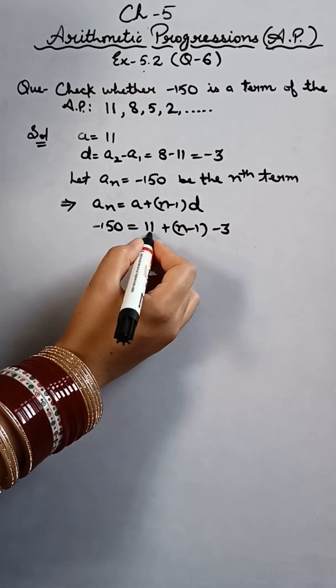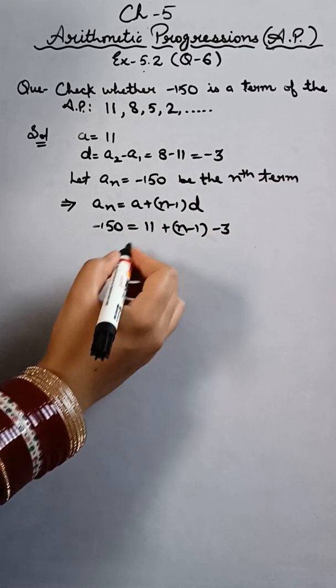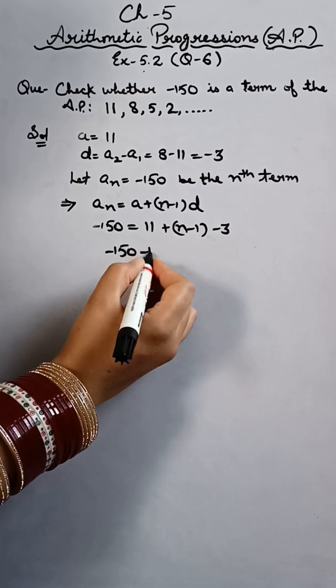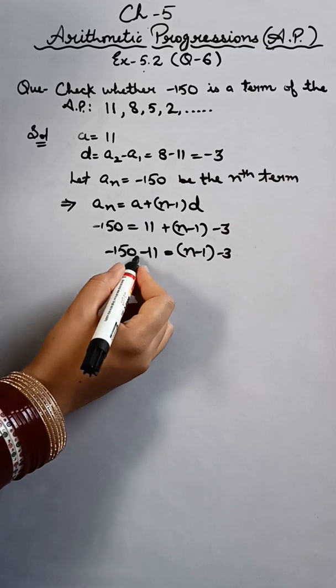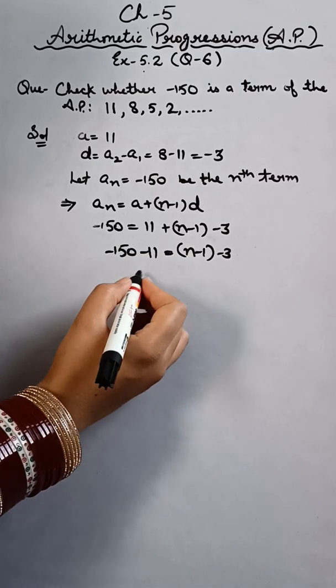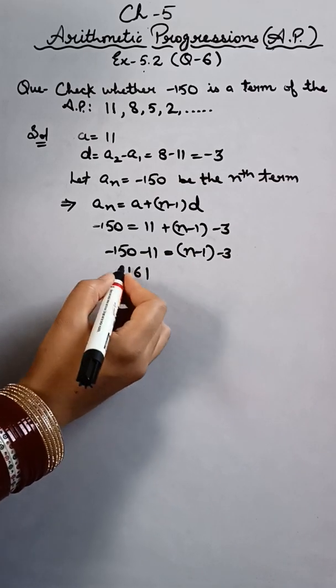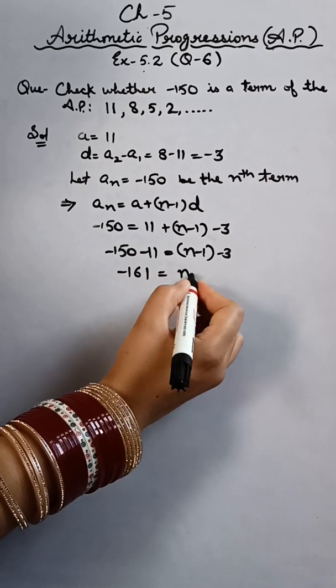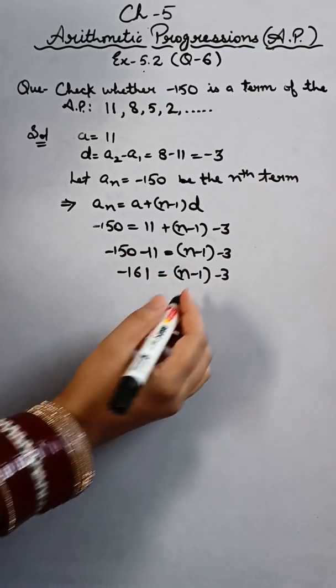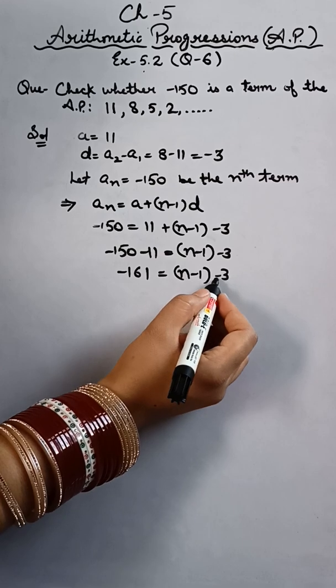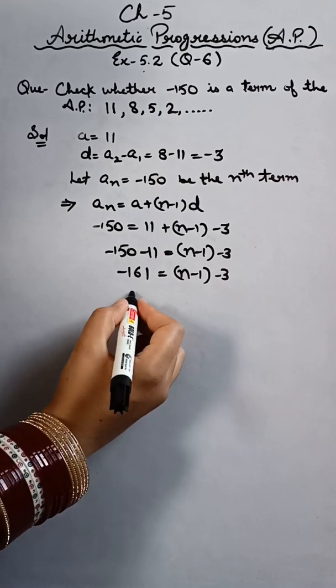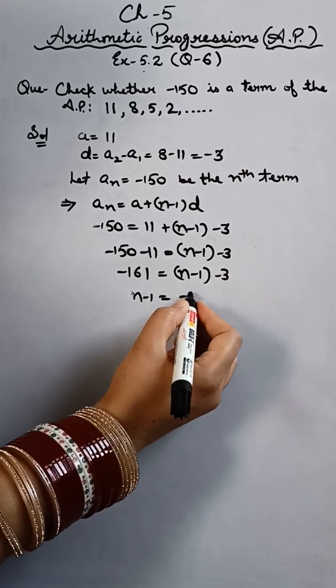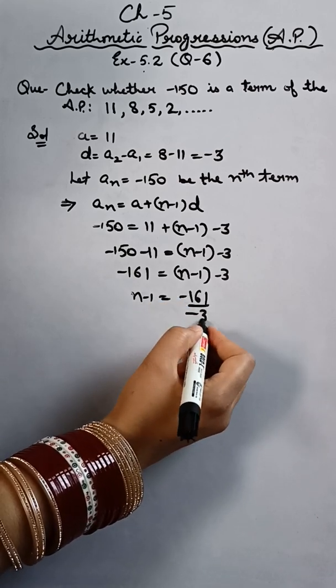So here, minus 150 equals 11 plus (n minus 1) times minus 3. Moving 11 to the other side gives minus 161 equals (n minus 1) times minus 3. Dividing both sides, minus 161 divided by minus 3, the minus signs cancel.